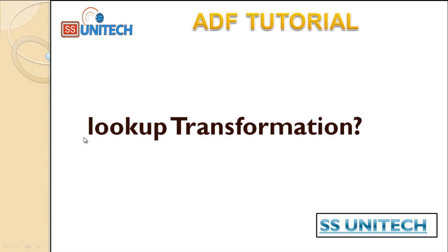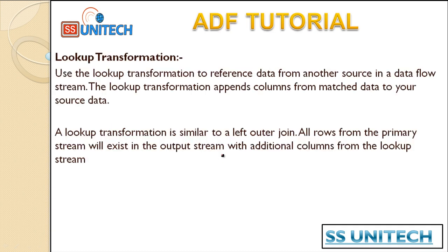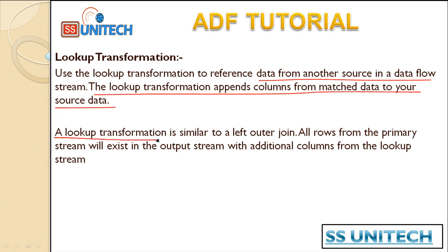Welcome to SSUnitech. Today we are going to start with the Lookup Transformation. The Lookup Transformation is used to reference data from another source into the data flow stream - it appends columns from matching data to your source data. A Lookup Transformation is similar to a left outer join, where all rows from the primary stream will exist in the output stream with additional columns from the lookup stream.